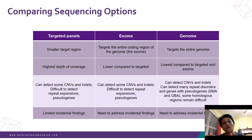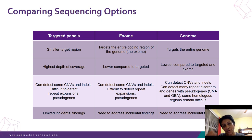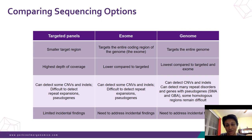According to ACMG guidelines, panels and exomes are run at 100x depth, and the genome at 30–40x; 40x is ideal to pick up all insertions and deletions. When a lab report arrives, it's important to quickly check the methodology section to confirm the method is described properly, depth of sequencing is mentioned, and metrics are given — especially when a report is negative.